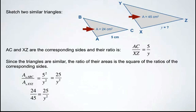Now to figure out what y is, we need to perform the procedure of cross multiplying. So we'll multiply those two values followed by those two. 24 times y squared is 24y squared, and 45 times 25 looks like this.